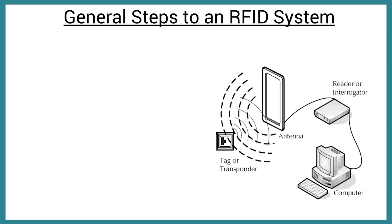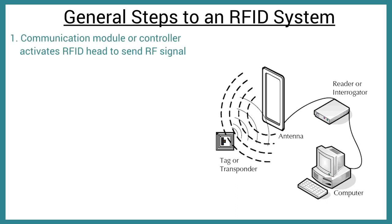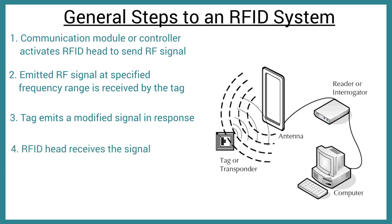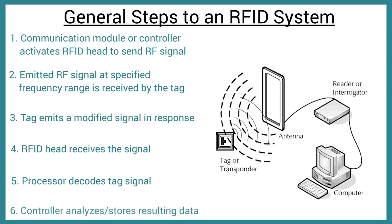Here are the general steps to a basic RFID system. A communication module or controller activates the RFID head to send an RF signal. The emitted RF signal at the specified frequency range is then received by the tag. The tag emits a modified signal in response. The RFID head then receives the signal and the processor decodes it. Finally, the controller analyzes and stores the resulting data.